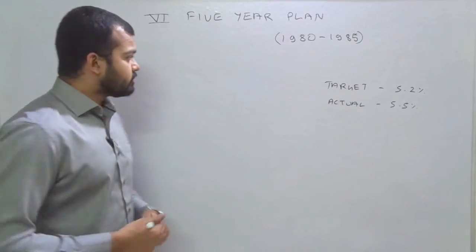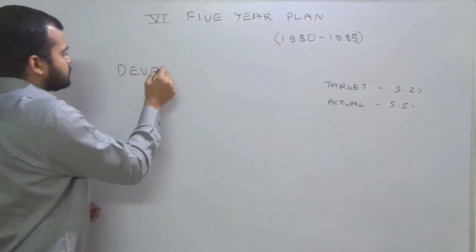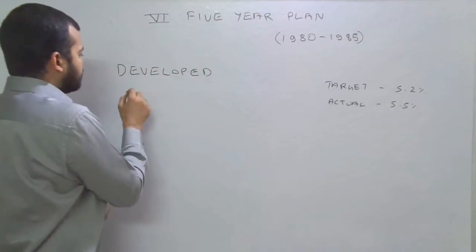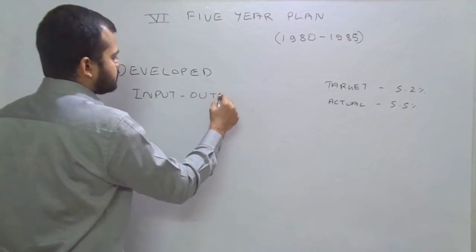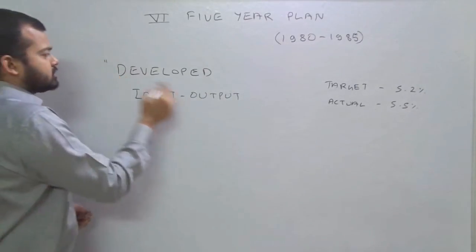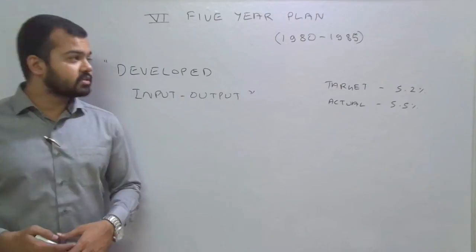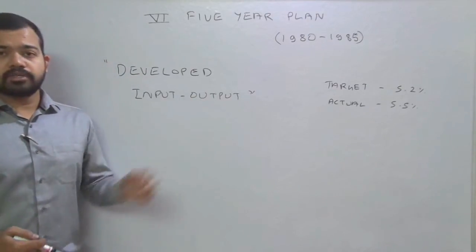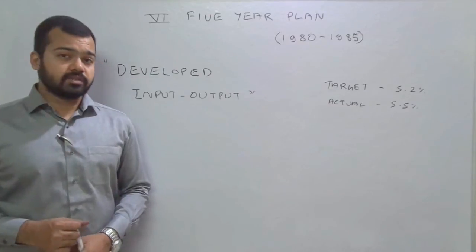Now we will discuss about the model. This plan was based on the developed input-output model. In the last lecture we discussed about the input-output model, and here the developed input-output model was the major criteria of this Five Year Plan.